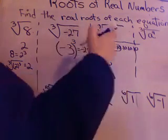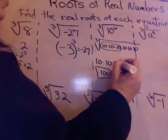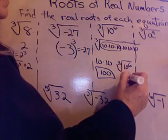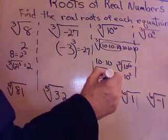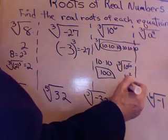Cube root of 10 to the 6th is 100. You could also say the cube root of 10 to the 6th is 10 squared, right? 10 squared times 10 squared times 10 squared. And 10 squared is 100.